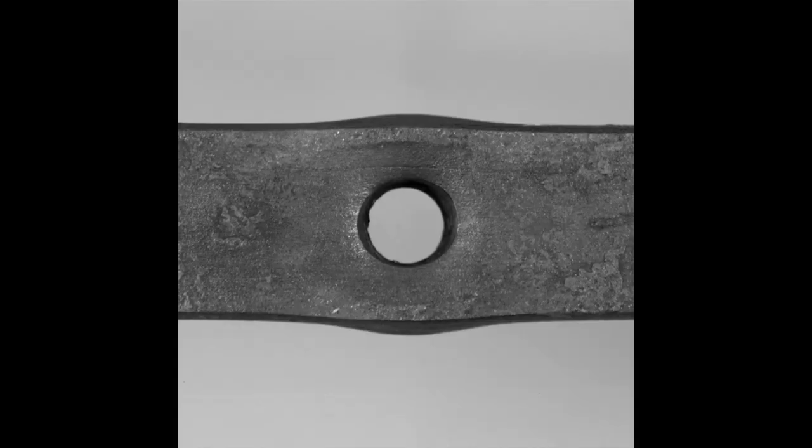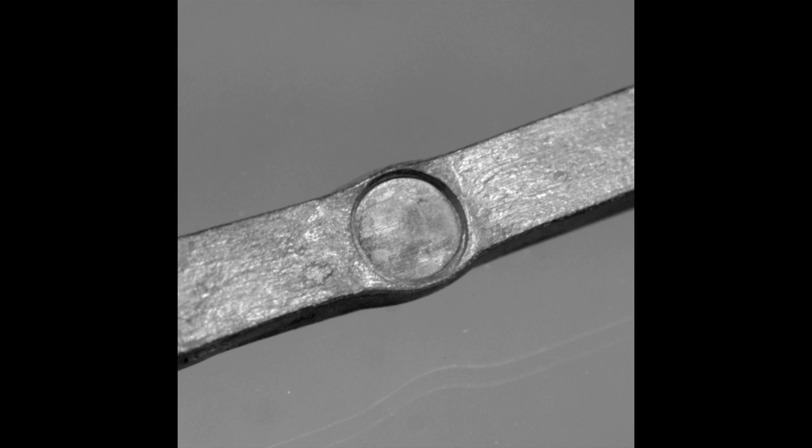Let's take a normal blacksmith's tapered round punch. If we punch a hole in a piece of flat bar, no problem. But if we use that same punch in square bar, we can cut the bar in half.